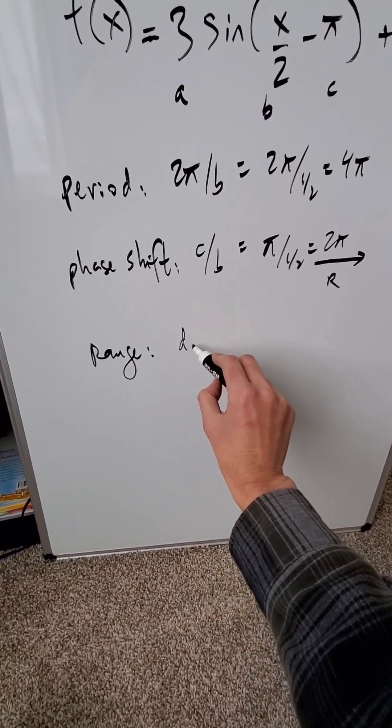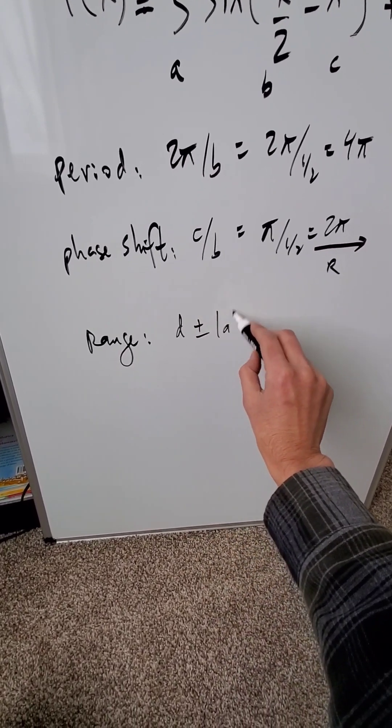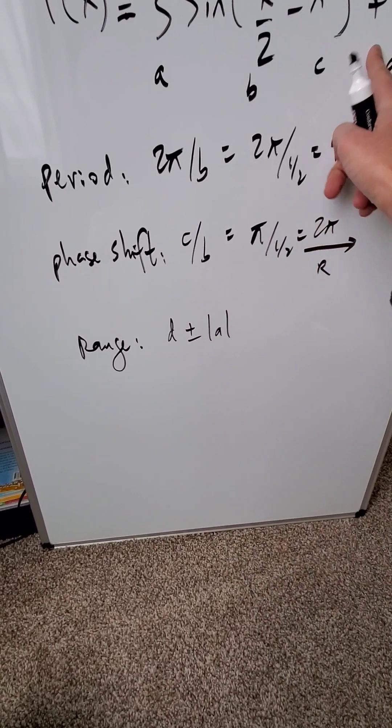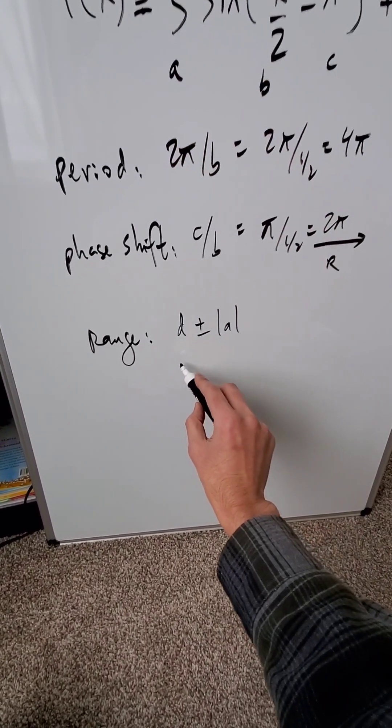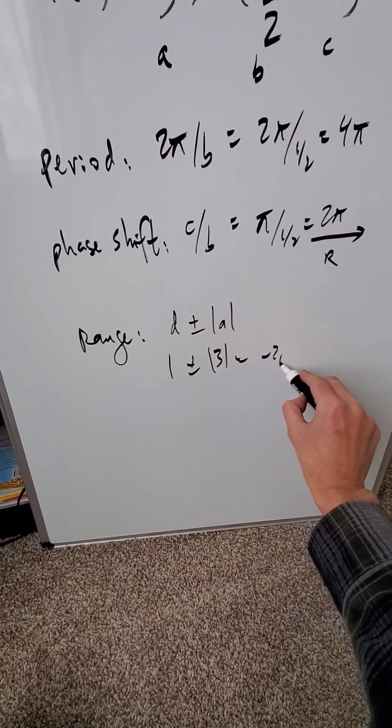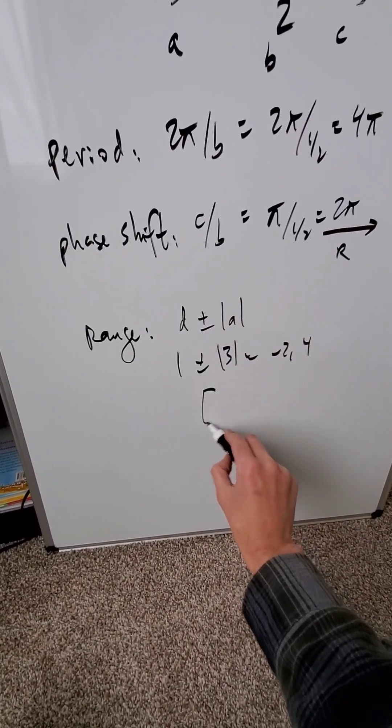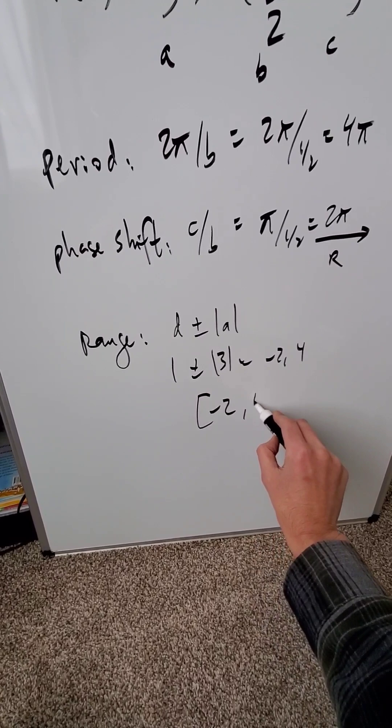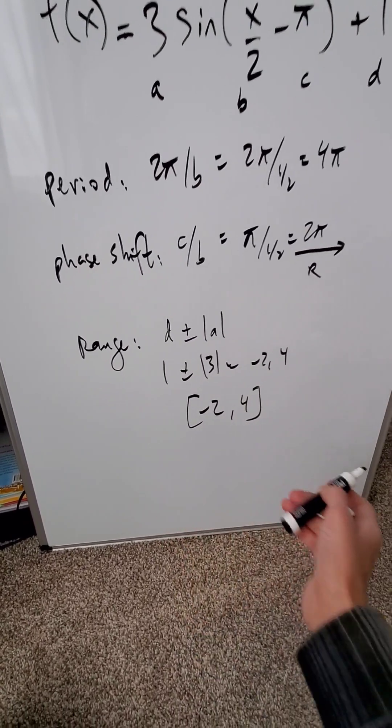Your range comes from the formula d plus and minus your absolute value a, your vertical translation and your amplitude. You have here a value of 1 plus and minus 3. When you compute this, you're getting a minus 2 comma 4. This is giving you the range. The lowest point is minus 2. The highest point is 4 in terms of your sine function.